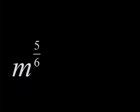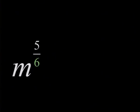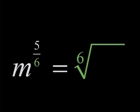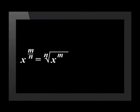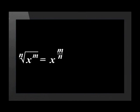Can you write this power with a root sign? What do we have in the denominator? A 6 — so the root sign must be 6. And the numerator 5 stays with the base under the root. So we can generalize this as: x to the power of m over n is equal to the nth root of x to the power of m. The reverse of this law is also true: if we have the nth root of x to the power of m, we can write this as x to the power of m over n.